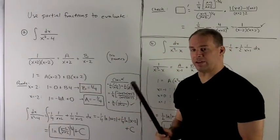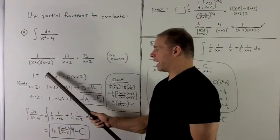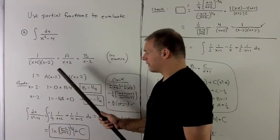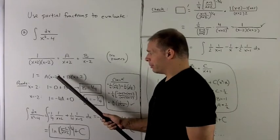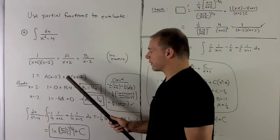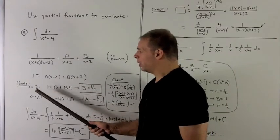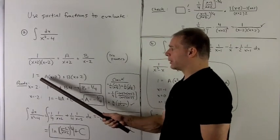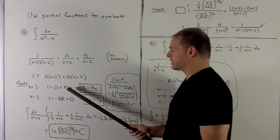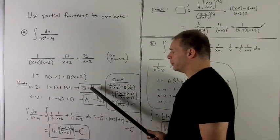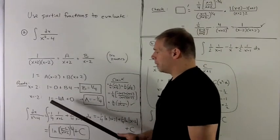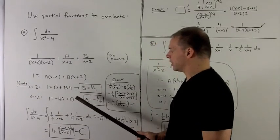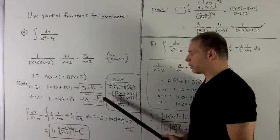For the distinct linear factor case, the way I can solve for A and B easily is just to pick off the roots or the numbers that are going to make these terms go to 0. So for instance, I'm going to use 2 and minus 2. When I put a 2 in here, I'm going to have 1 equals 0 plus 4 times B. So B is equal to 1 fourth. And when I use minus 2, I'm going to put in, and we're going to wind up with 1 equal to minus 4A plus 0, A equals minus 1 fourth.